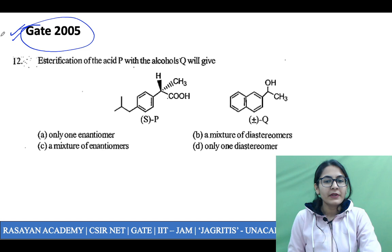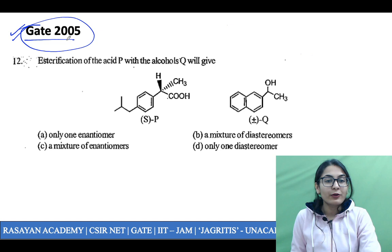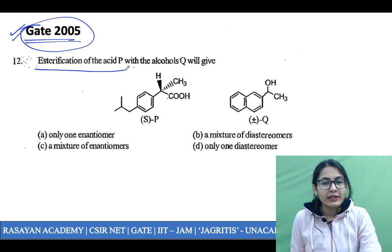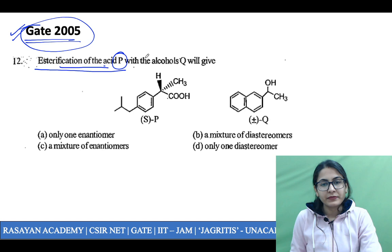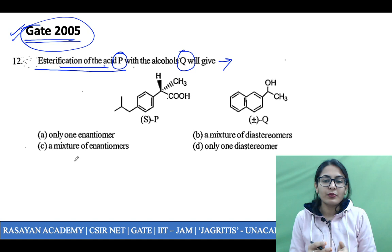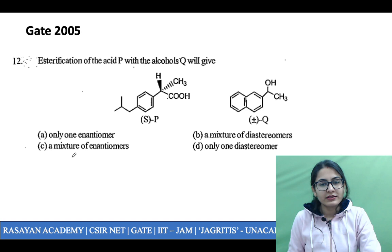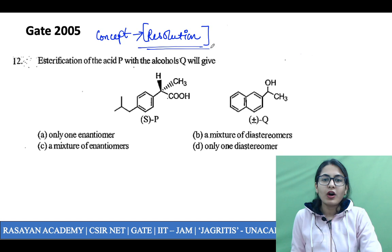This is your GATE 2005 question, and your GATE 2021 exam is also coming very soon. I hope that this is going to be an eye-opener video for all of you. GATE 2005 is asking you: esterification of acid P with alcohol Q will give. You can stop the video and answer by yourself. The concept that the question is asking about is the resolution of a racemic mixture.